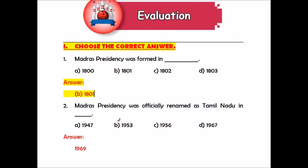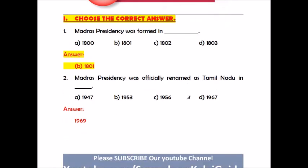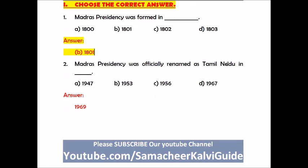Question number two: Madras Presidency was officially renamed as Tamil Nadu in dash. Options are 1947, 1953, 1956, 1967. The answer is 1969 — note that 1969 is not given in the options.